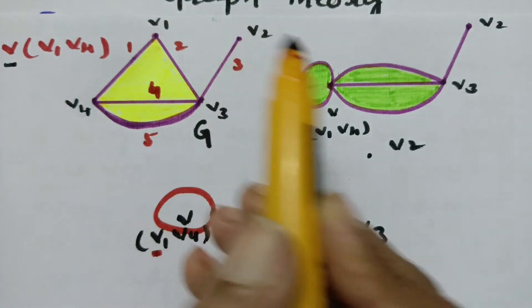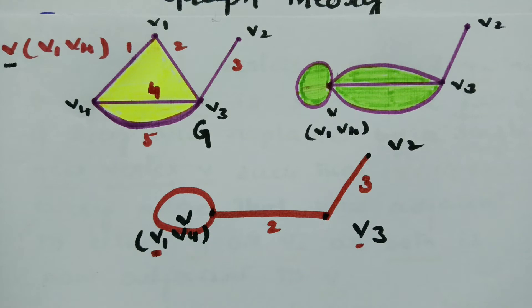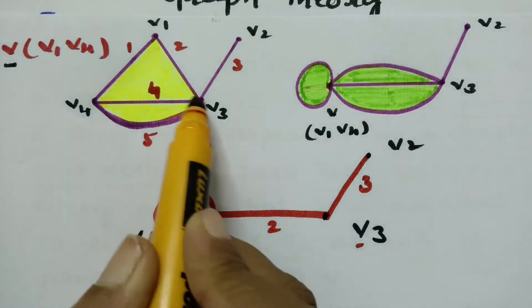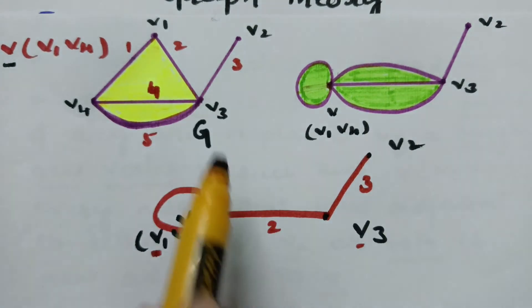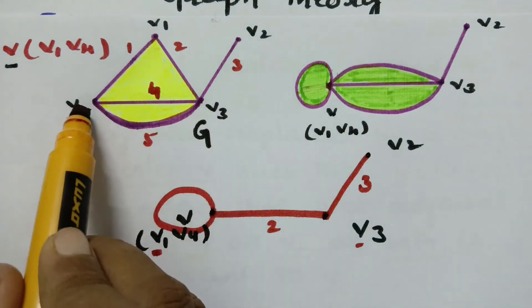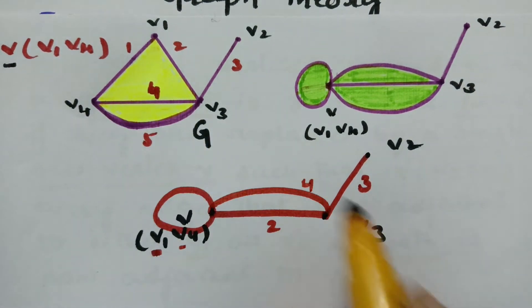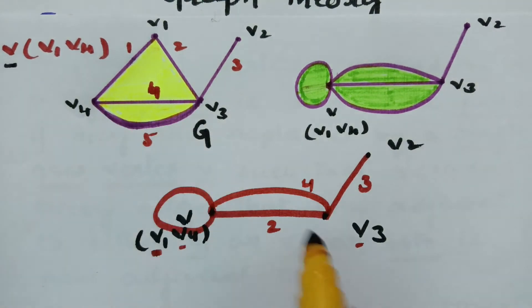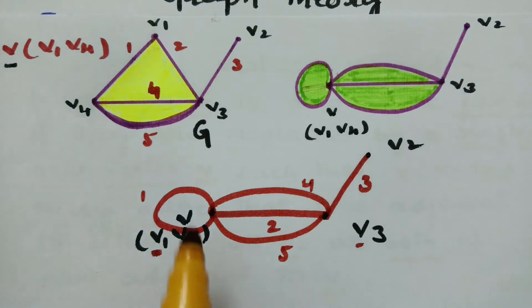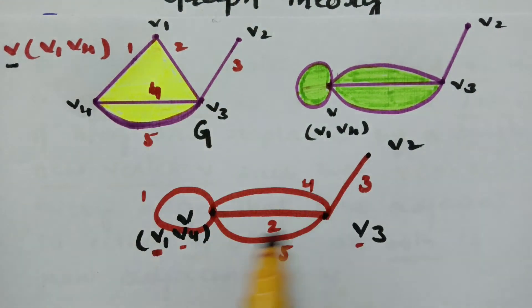Next, V2 makes an edge with V3, which is edge 3. V3 has four edges: one with V2 (already there), one with V1 (already there as edge 2), and V3 to V4 — since V1 and V4 are fused into the same vertex, I am drawing another edge — edge 4. And V3 is making another edge with V4, which is edge 5. The loop counts as edge 1, so the total edges are 1, 2, 3, 4, 5.